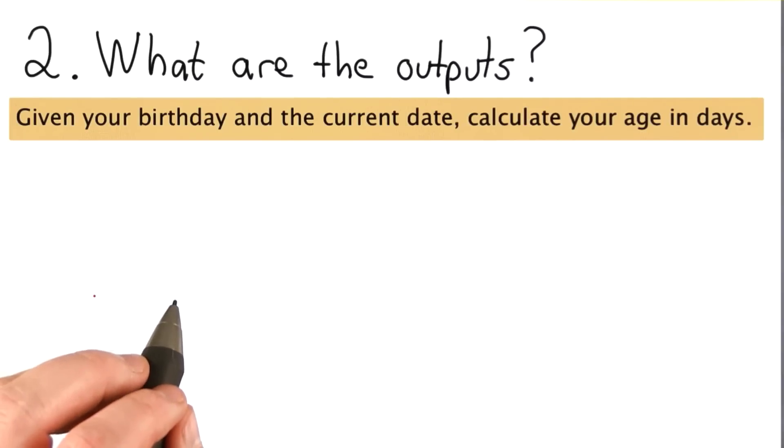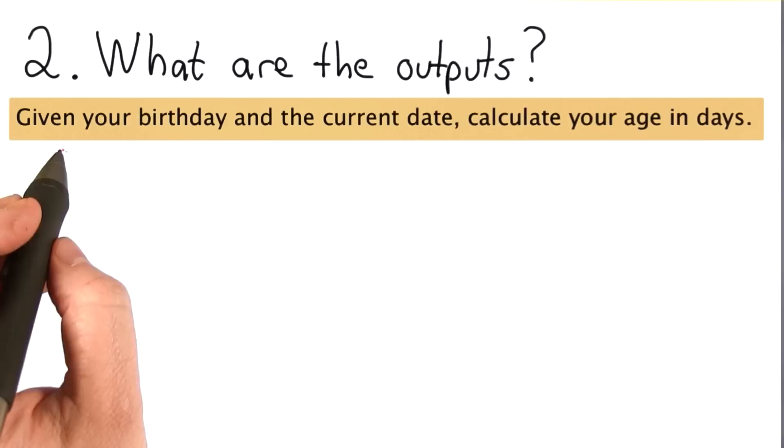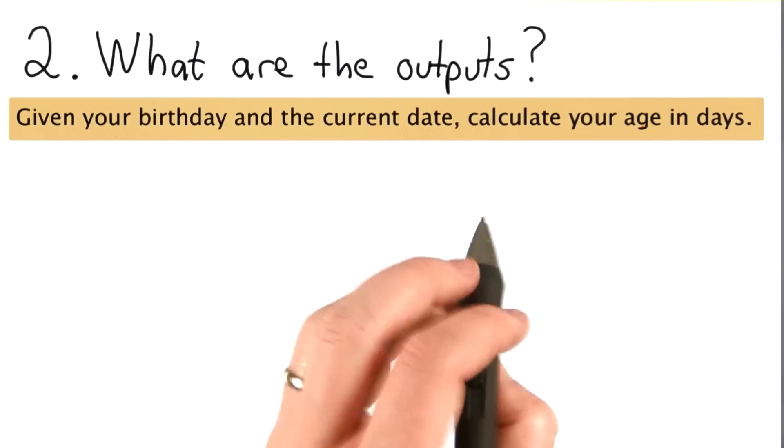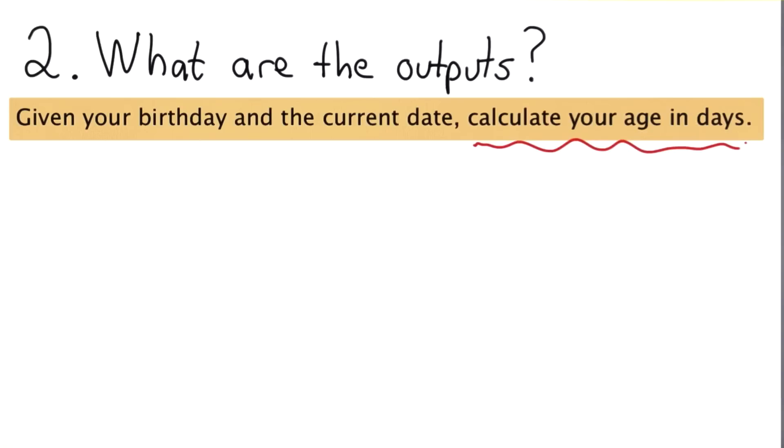So the next thing we need to understand about the problem is what are the outputs. The statement of the question gives some idea of what the output should be in the calculate your age in days part, but it doesn't specify explicitly what we want the output to be. So let's make that a quiz. See if there's enough information here for you to decide how we should specify the output.